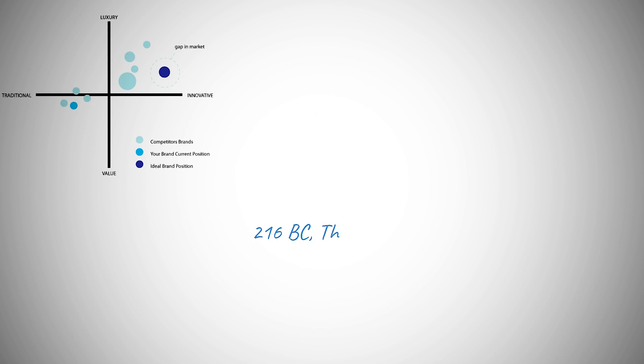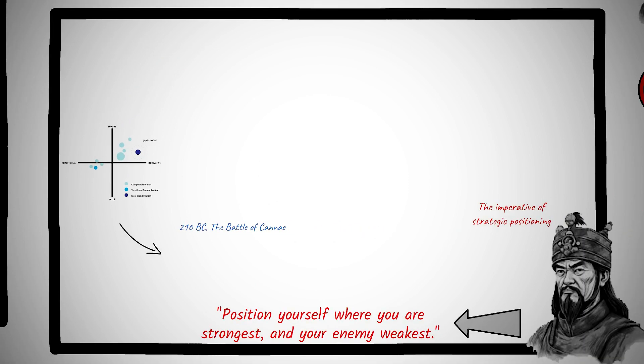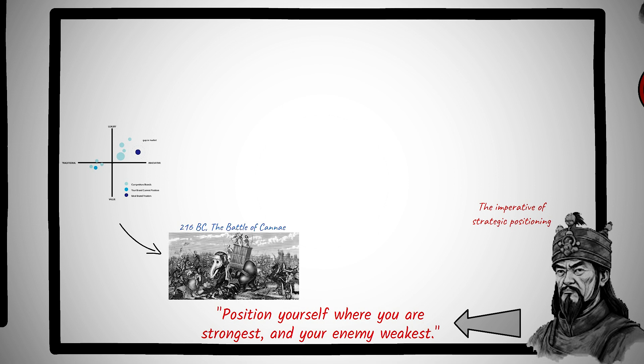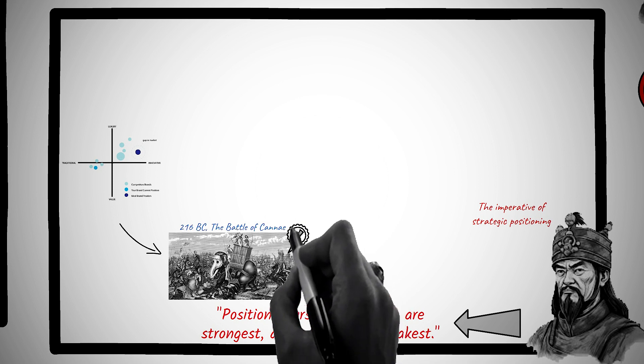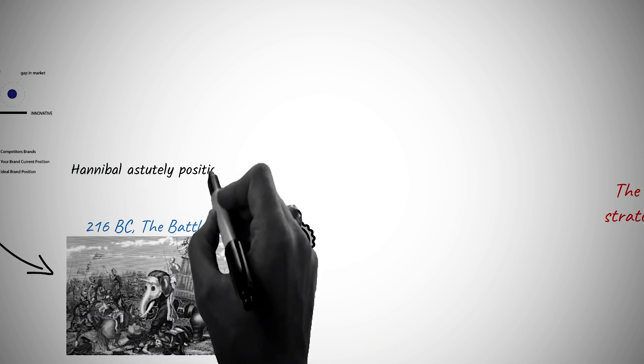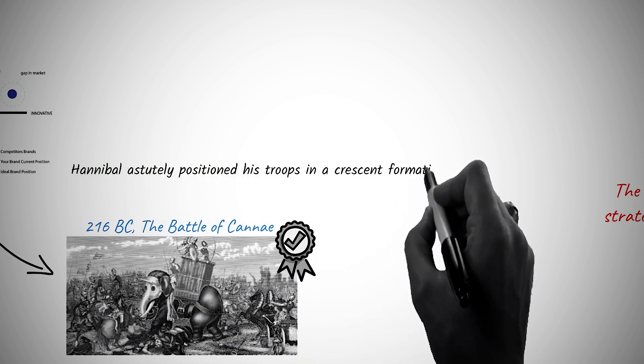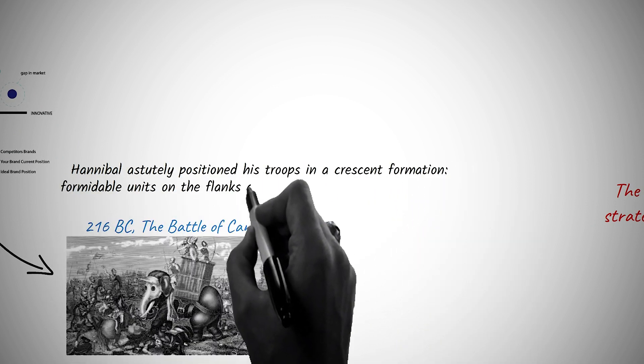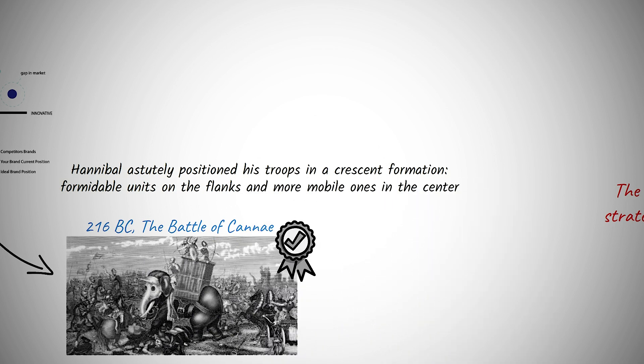In 216 BC, the Battle of Cannae became a touchstone in military strategy during the Second Punic War. Rome, boasting numerical superiority, anticipated a clear victory over the Carthaginian forces led by the ingenious Hannibal Barca. Yet, Hannibal astutely positioned his troops in a crescent formation, formidable units on the flanks, and more mobile ones in the center.